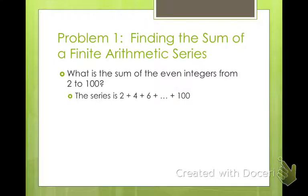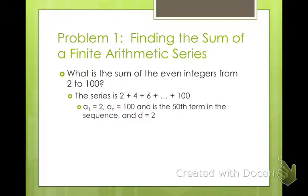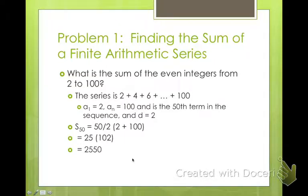So our series is 2, 4, 6, we're going to be adding them all together. a sub 1 is 2, a sub n is 100. There are 50 terms in the sequence and our common difference is 2. We plug all those things into that formula: S sub n equals n over 2 times a sub 1 plus a sub n. So 50 divided by 2 times 2 plus 100. 50 divided by 2 is 25, 2 plus 100 is 102, and 25 times 102 is 2,550. That gives you the sum of all those terms from 2 through 100, even integers.